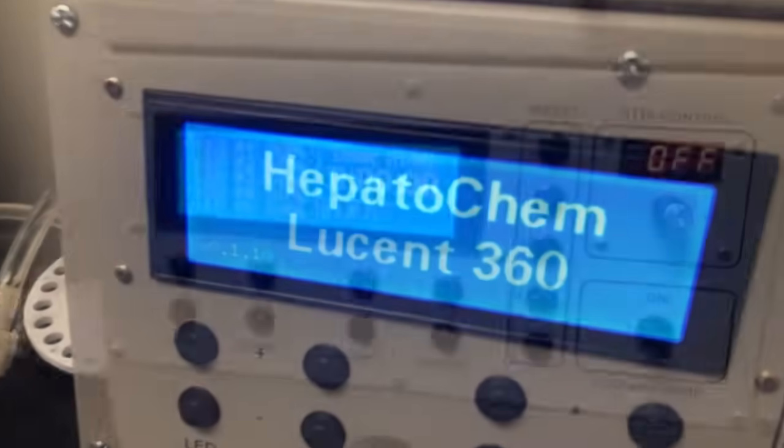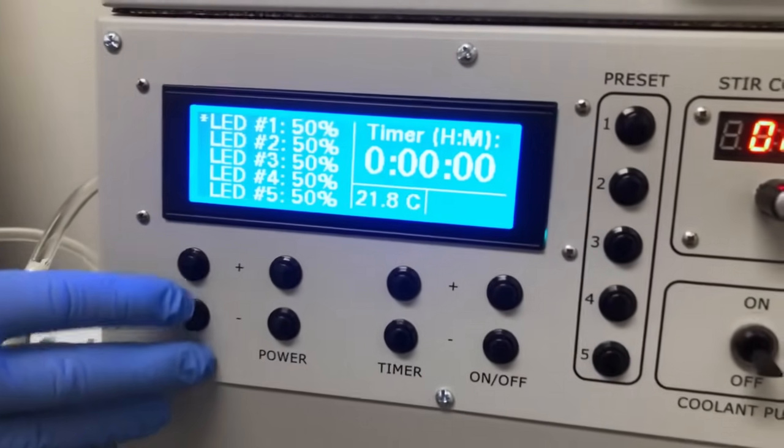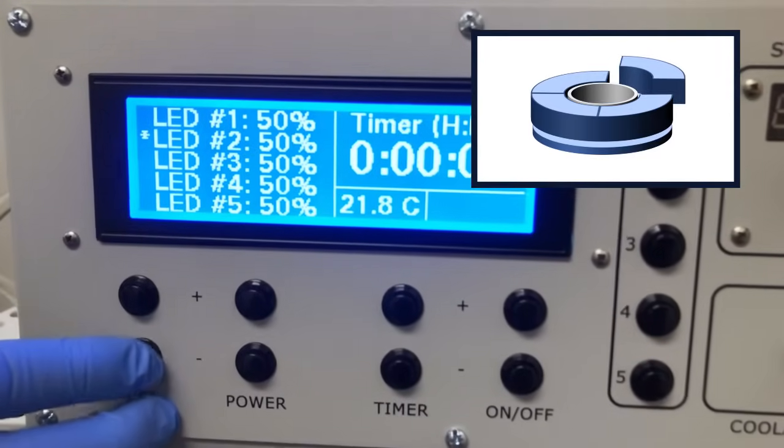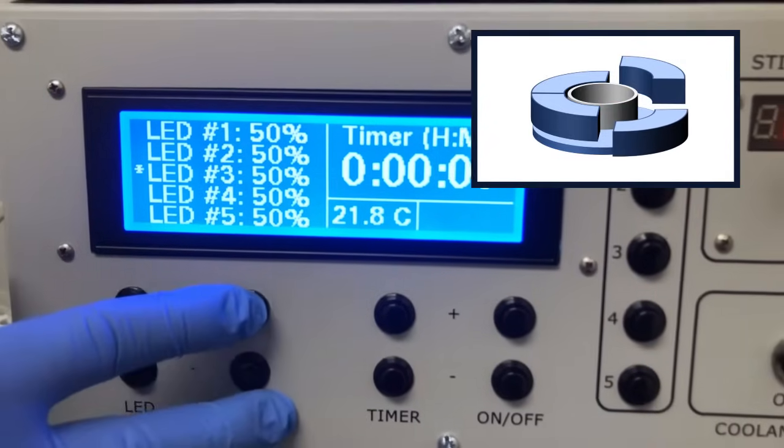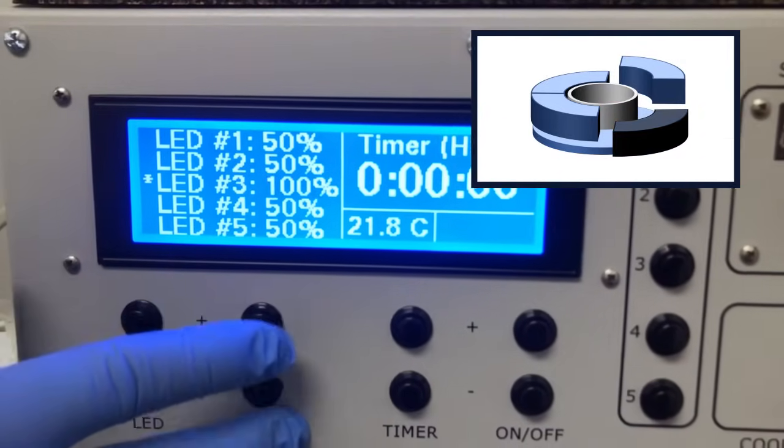The LED buttons allow you to control the intensity of each module. As we navigate from the first module to the second and then to the third module, you can also see how the power buttons enable us to adjust the intensity of a specific module.